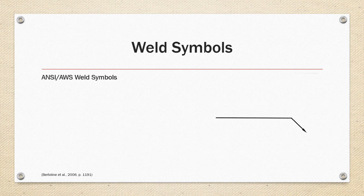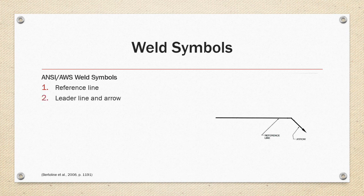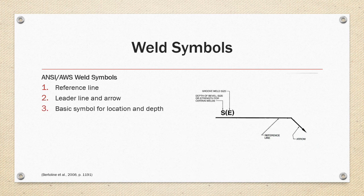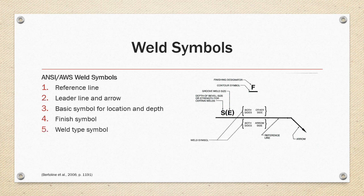ANSI has worked with AWS for the weld symbology. The most basic form of a welding symbol consists of a reference line and an arrow with a leader. The basic symbol includes groove weld size, and depth of bevel is denoted on the reference line. Finish symbols and contour symbols may also occur, and the weld type symbol will occur on the reference line. The symbology uses a system where information on one side of the line refers to the side that the arrow is pointing at.